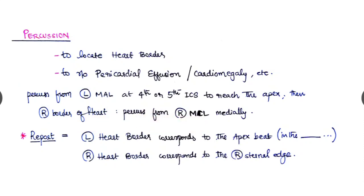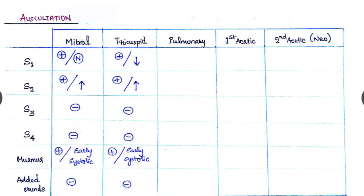And the usual reporting is like this: the left heart border corresponds to the apex beat which is present in like fifth or sixth left intercostal space, half inch medial to the mid clavicular line, like that. And the right border of the heart corresponds to the right sternal edge, and this is the normal case. Coming to the auscultation, we have to tabulate it. This is more impressing.